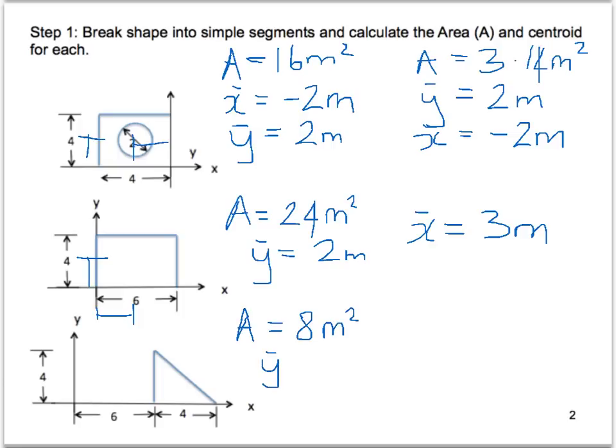Our Y bar will now be this height, which is 1 third from the base, which is going to be equal to 1.33m. And our X bar will be 1 third from the base plus 6, so that is going to equal 7.33m.